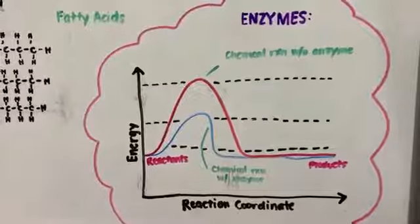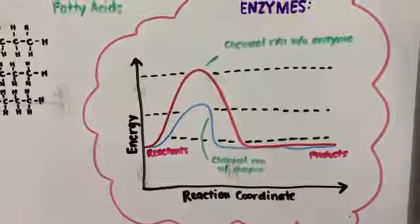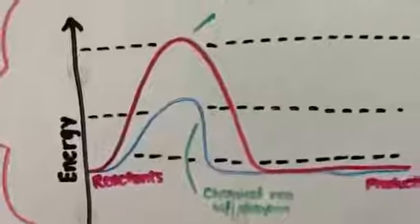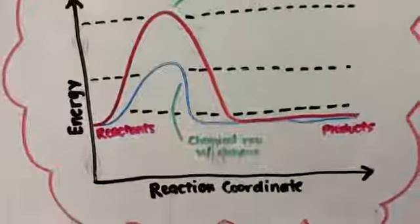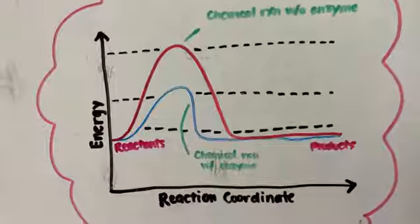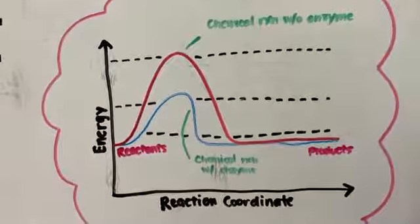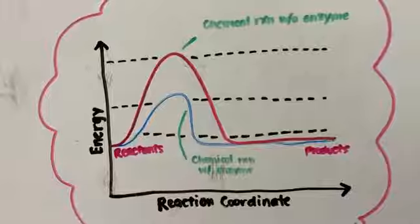The graph shows a chemical reaction and the amount of energy required to start that reaction. The red graph, if you can see, is a chemical reaction without enzymes and the blue graph is a chemical reaction with an enzyme. Without an enzyme, we can see that the energy required to start the reaction is greater than the energy needed to start the reaction with the enzyme.